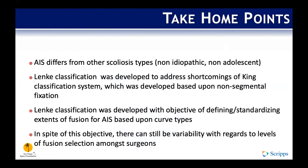Take-home points: AIS is different from other scoliotic types. The Lenke classification was developed to address the shortcomings of King and other classification systems born from the era of non-segmental fixation. Lenke was developed with the objective of standardizing fusion limits based on AP, lateral, and bending radiographs. Despite these objectives, there remains variability among surgeons regarding LIV selection for certain curve types, even with this classification system.